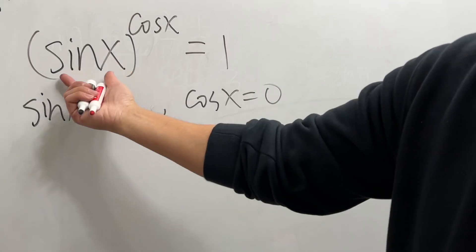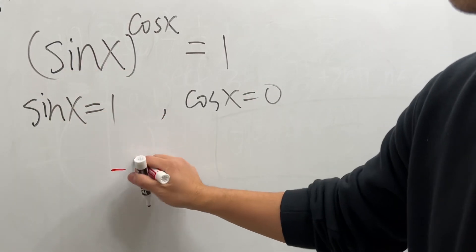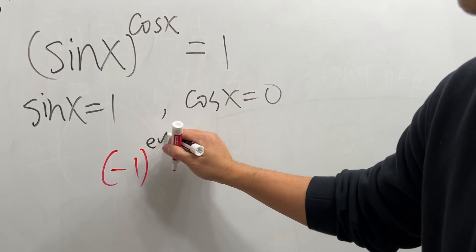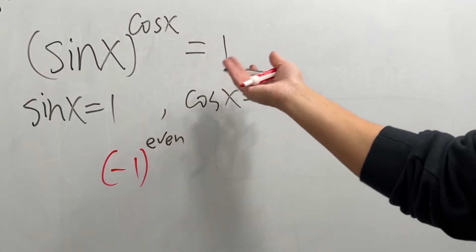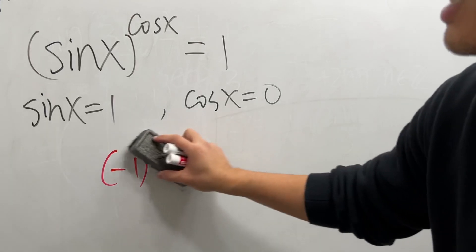And then the last thing is, maybe the inside here is negative 1. But if we have negative 1 for the base, right here we must have an even number. But cos can never be 2 or any even number, so that's not possible.